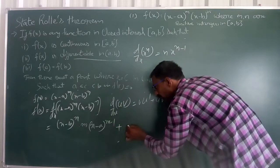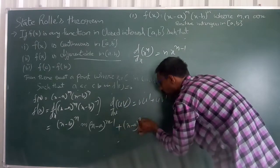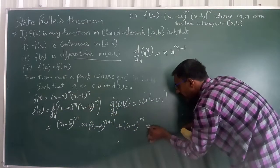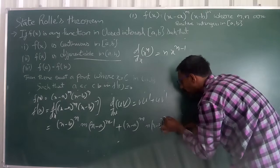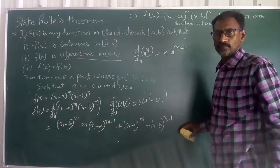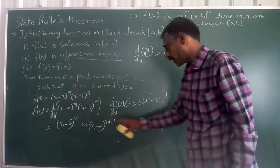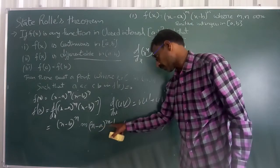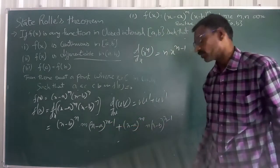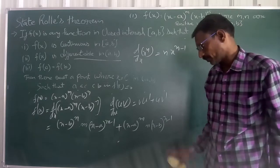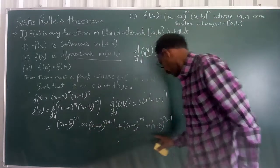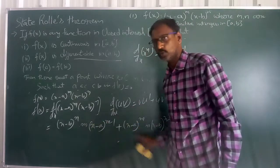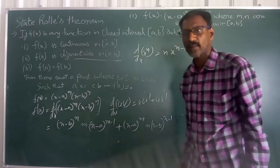Then plus: keeping (x - a)^m aside, we differentiate (x - b)^n to get n · (x - b)^(n-1). Now (x - a)^(m-1) is common in the first term, and (x - b)^(n-1) is common between these two terms.